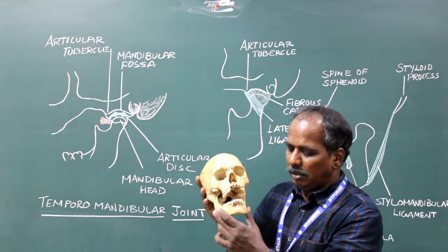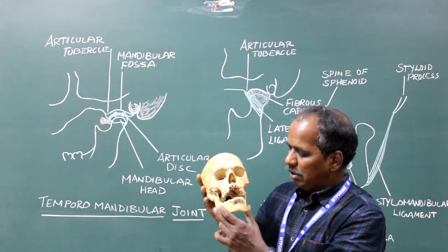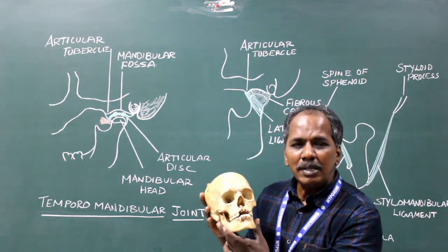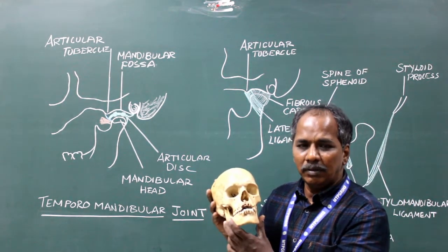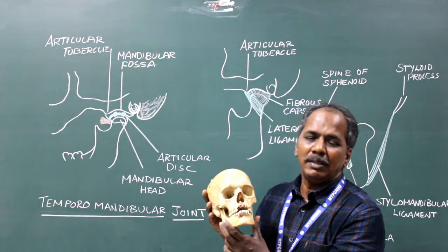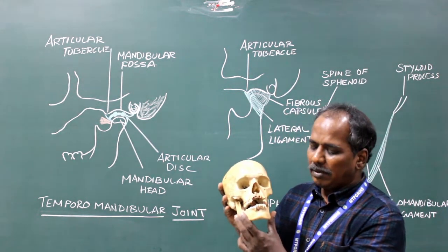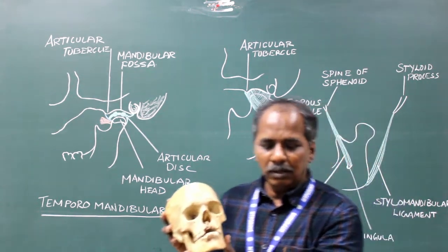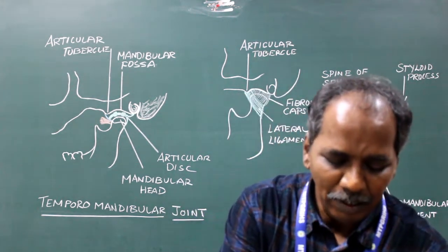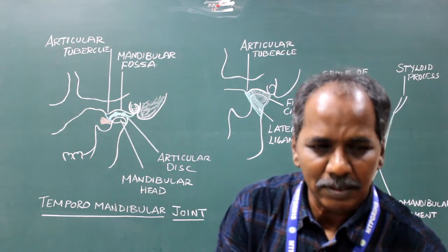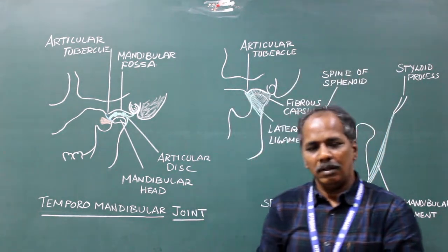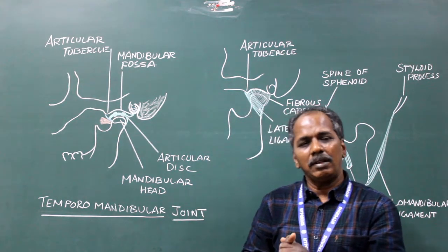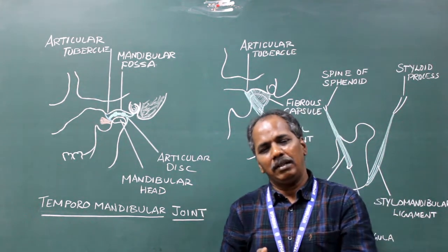Retraction, that is moving backwards, is caused by posterior fibers of temporalis. Side to side movement is caused by medial and lateral pterygoid of one side, working with medial and lateral pterygoid of the opposite side.